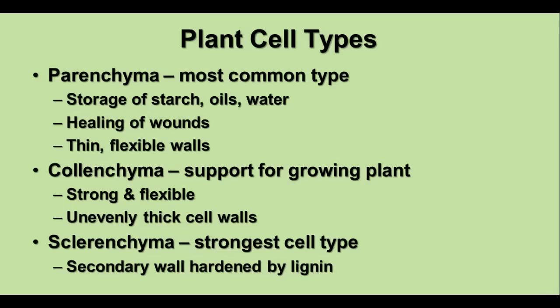There are three main kinds of cells found in plants: parenchyma, colenchyma, and sclerenchyma. The most common type is the parenchyma cell. These are used for storage of various substances like starches, oils, and water. These are also the cells that heal wounds to the plant. They have thin, flexible walls and can be used for lots of different things.